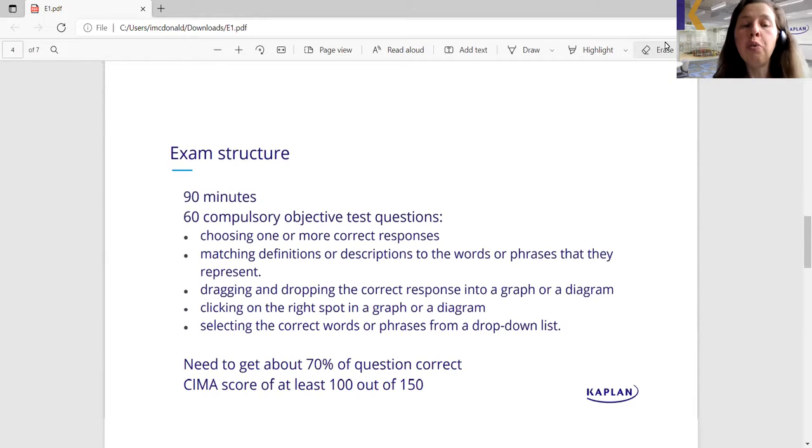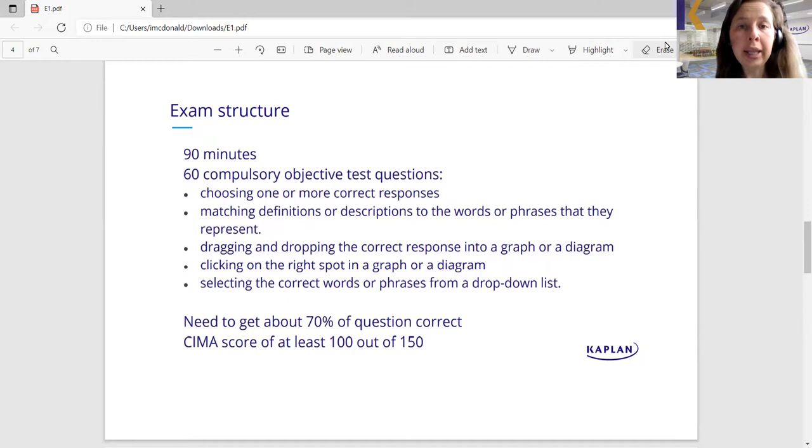Moving on to the exam structure. The exam is 90 minutes long and contains 60 compulsory objective test questions. An easy way to describe objective test questions is multi-choice, but not all of those questions will be just click on the right option. There will be some that will ask you to choose one or more correct responses, but there will also be something called drag and drop questions where you need to drag a word or phrase to the matching description or to an appropriate part of a graph or diagram. You might also need to select correct words or phrases from a list that will complete a particular statement, or you will need to identify on a diagram where a particular issue belongs.